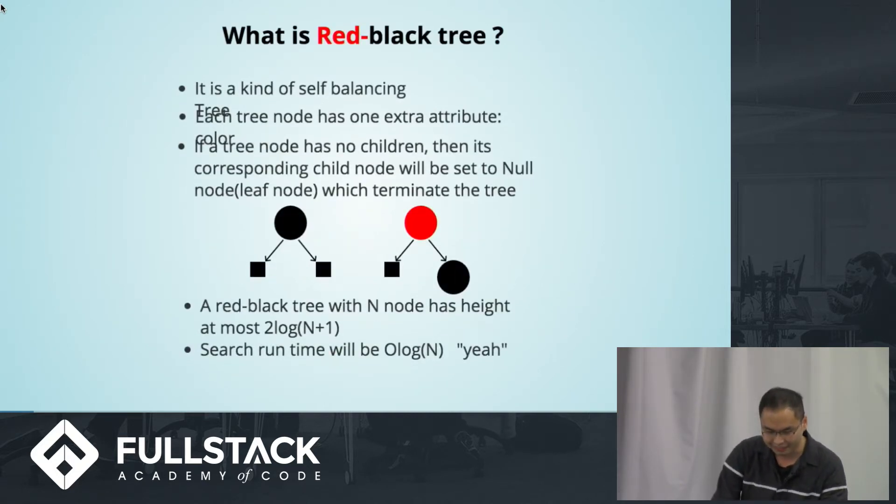Red-black tree is a kind of self-balancing tree, so you can expect it to have a kick-ass performance on the searching operations. Each tree node has one extra attribute, which is the color. And if a tree node has no children, then its corresponding child node will be set to null, which is the leaf node, which terminates the tree. You can see the leaf node is a black square that holds null value.